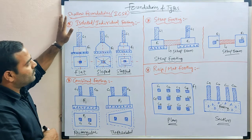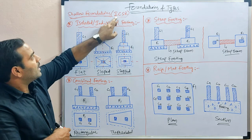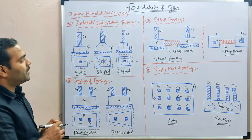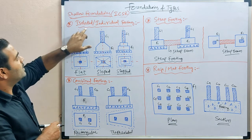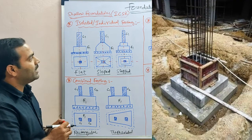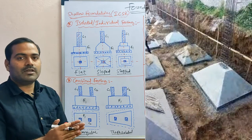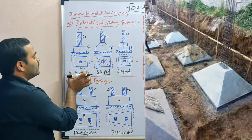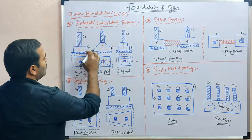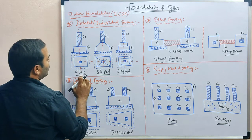The different types of shallow foundations can be remembered as IC-SR: Isolated, Combined, Strap, and Raft or Mat footing. The first type is isolated footing, also called individual footing — under every column there will be a separate footing. Isolated footings are again divided into three different types: flat footing, sloped footing, and stepped footing.